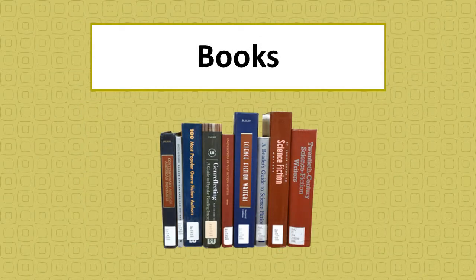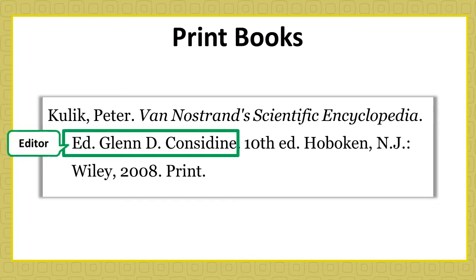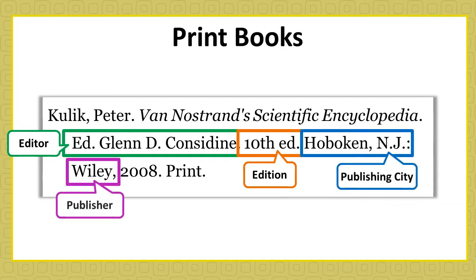Let's first take a look at books, which includes both printed and electronic versions. Books have many unique identifying markers. Books that are collections of essays or other works, like encyclopedias, will often have an editor. Books that have changed and been reprinted will have an edition number. The most important clue that the information type is a book is the inclusion of a publishing city and publisher.